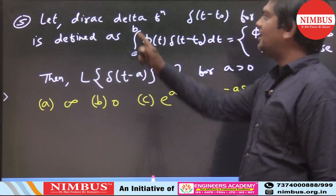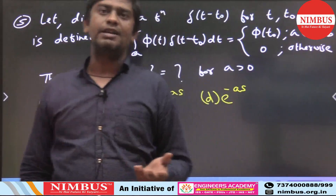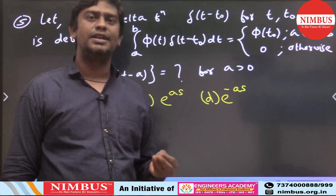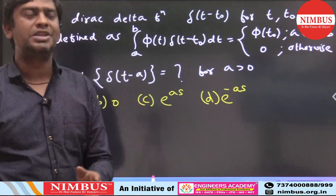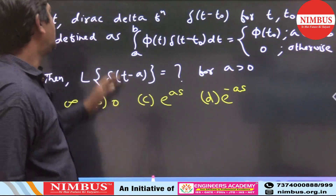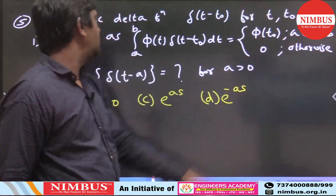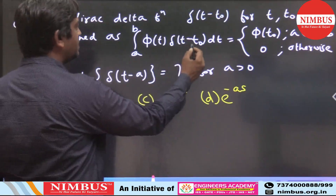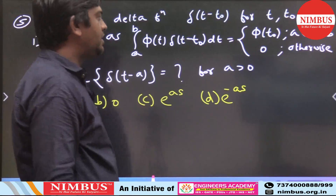A Dirac delta function is given. By definition, the Dirac delta function δ(t - t₀) satisfies: integral from a to b of φ(t)·δ(t - t₀) dt = φ(t₀) when t₀ is between a and b, and 0 otherwise.